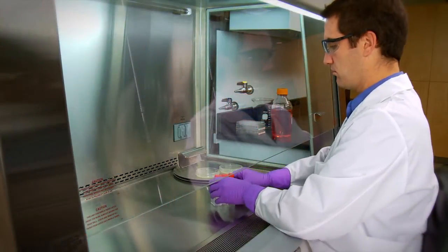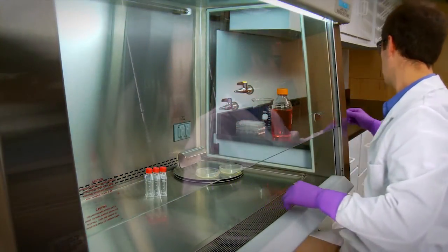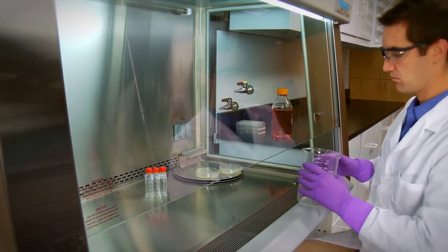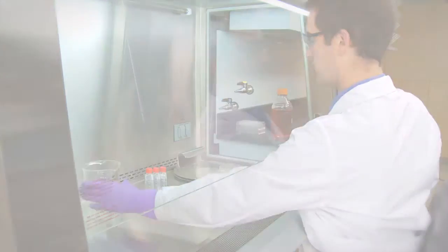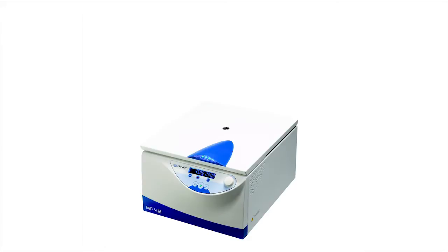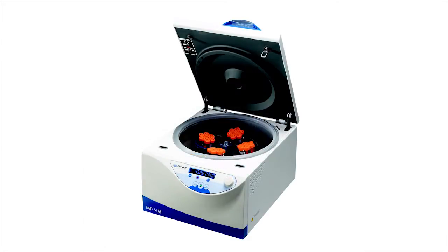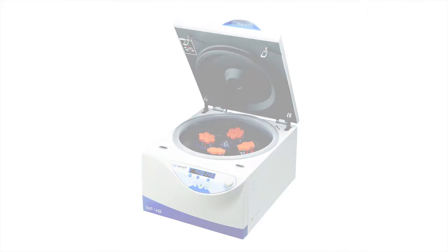All materials should be placed as far back in the cabinet as practical, toward the rear edge of the work surface and away from the front grill of the cabinet. Similarly, aerosol generating equipment such as vortex mixers or centrifuges should be placed toward the rear of the cabinet to take advantage of the air split.